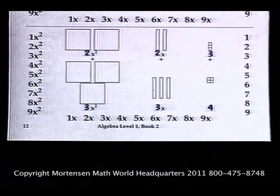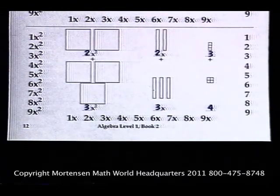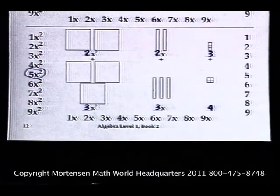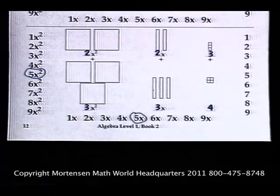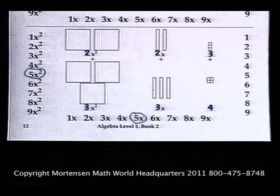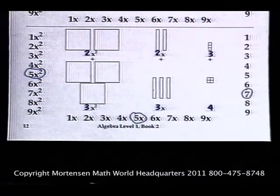Together, there are how many X-squares? Five. How many X's? Five. How many units? Seven. Great.